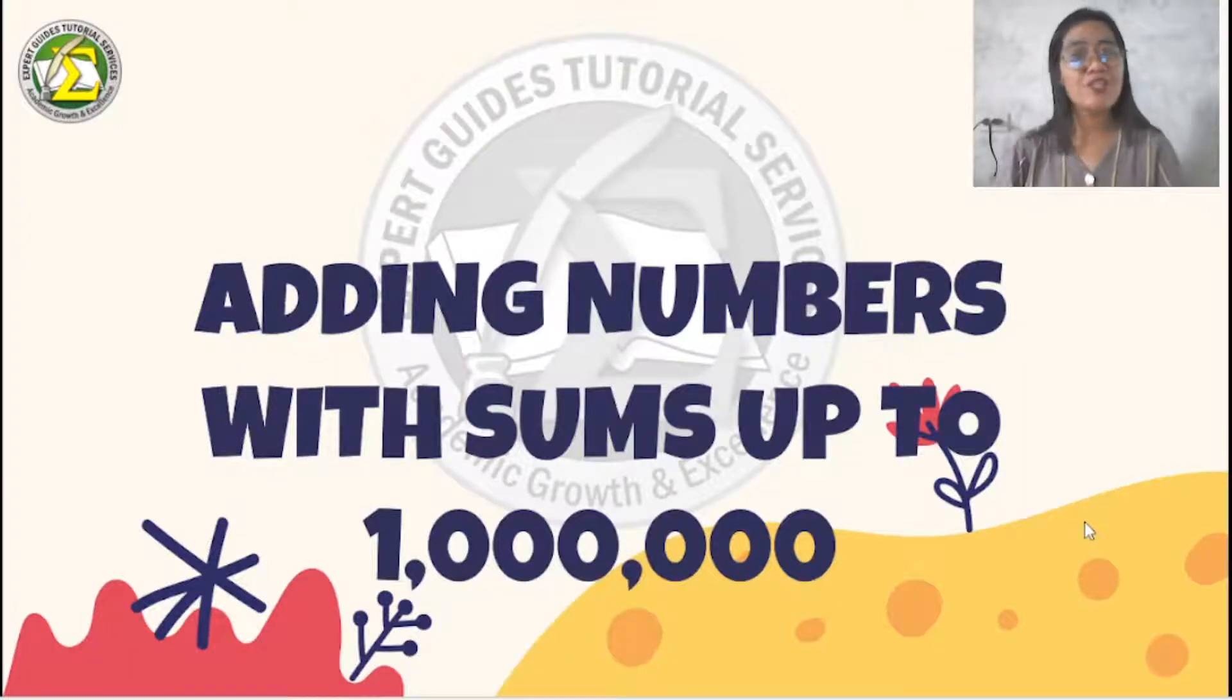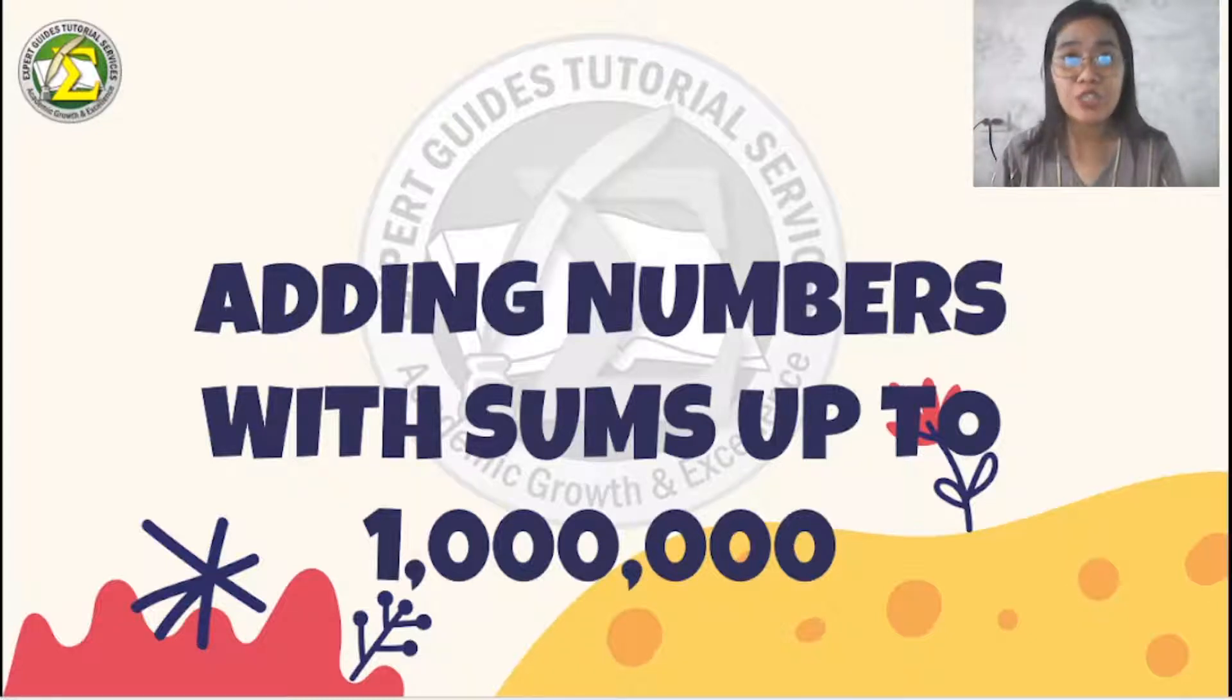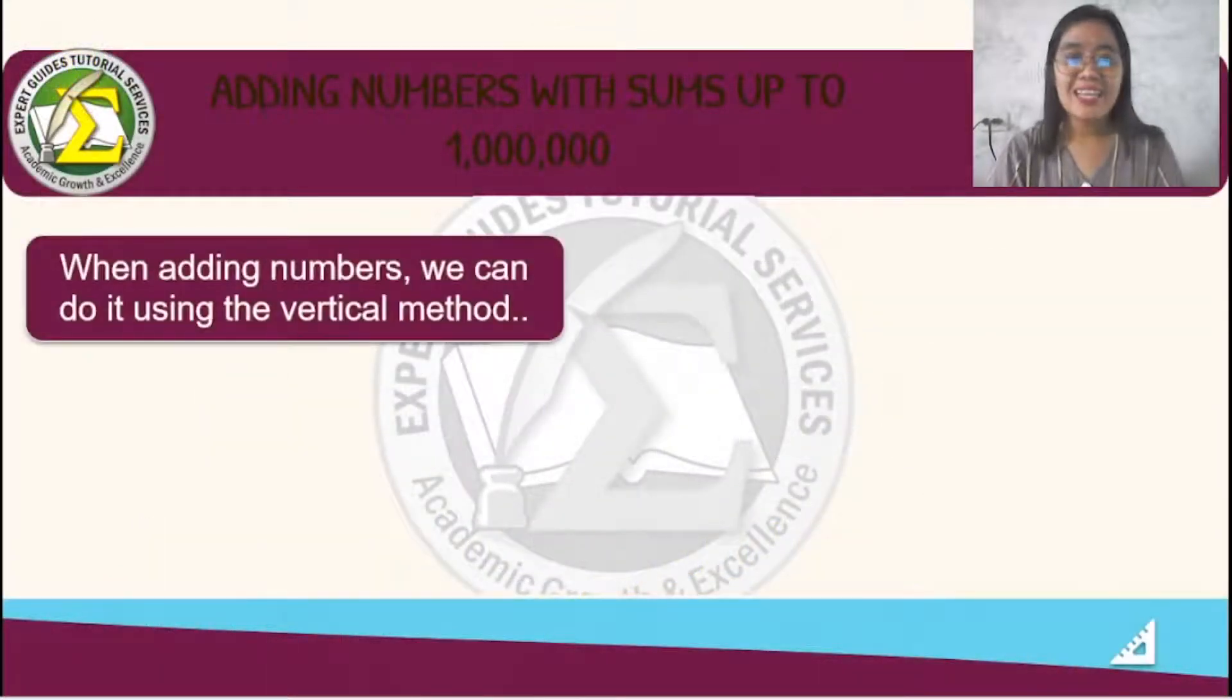Welcome to another episode of Expertage Tutorial Services. In our previous lesson, we talked about commutative property of addition. So today, we are going to discuss adding numbers with sums up to 1 million. Are you ready? Okay, let's begin.